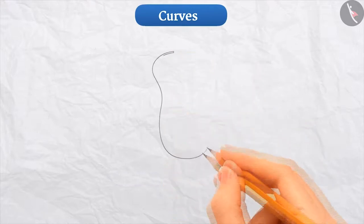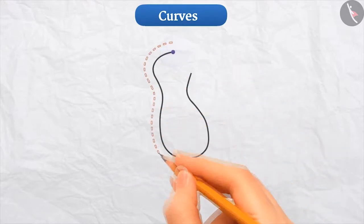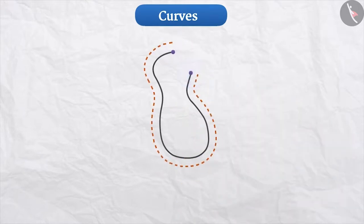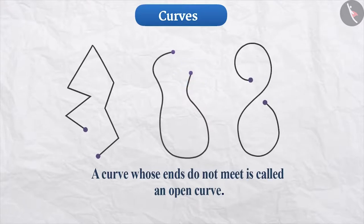If we look at this curve, we will find that it starts at one point and ends at another point. That means that the ends of this curve are not joined. Such curves whose ends are not joined are called open curves. The start and end points of such curves are different. The curves shown here are open curves.